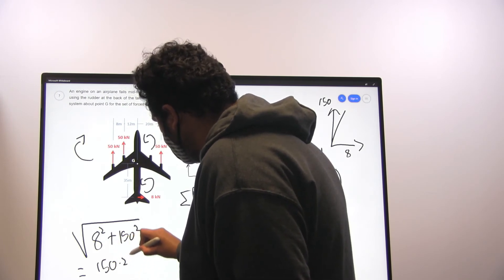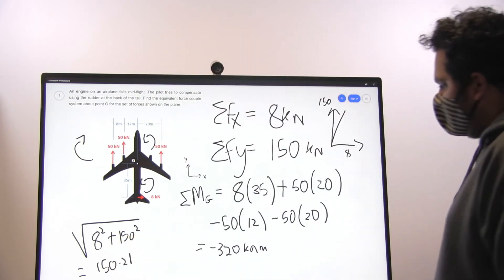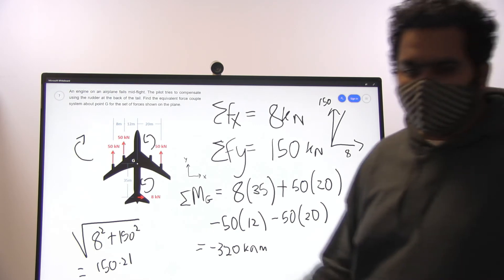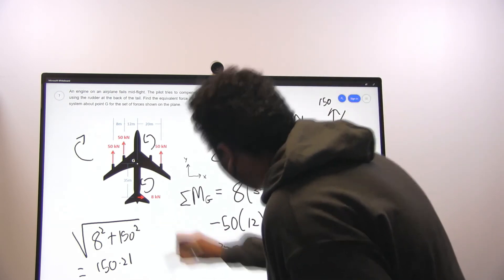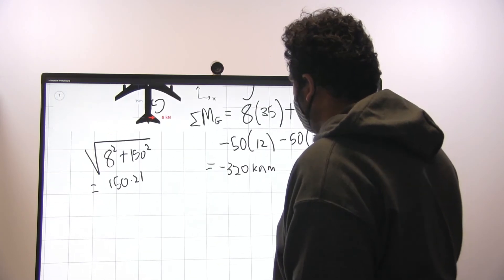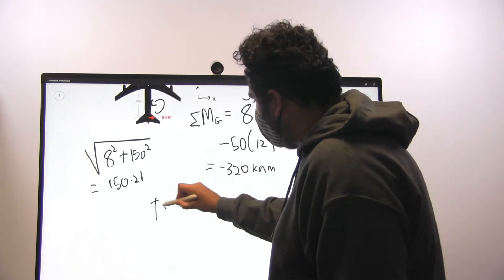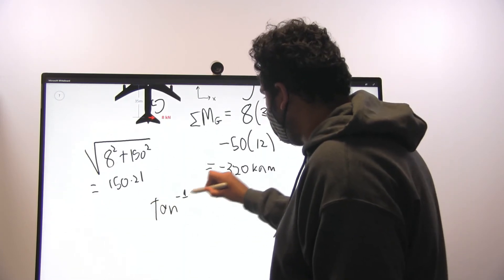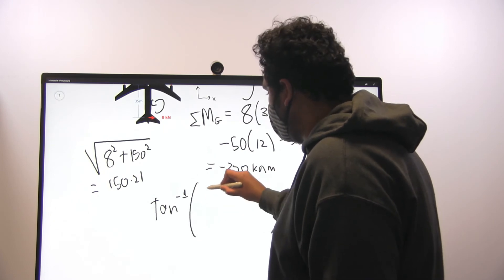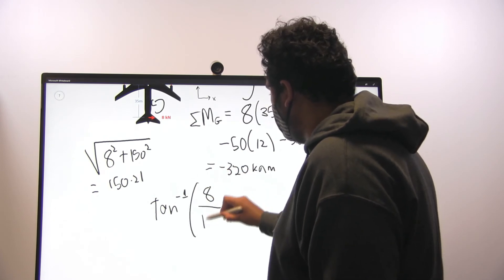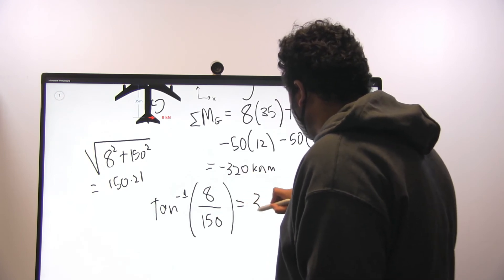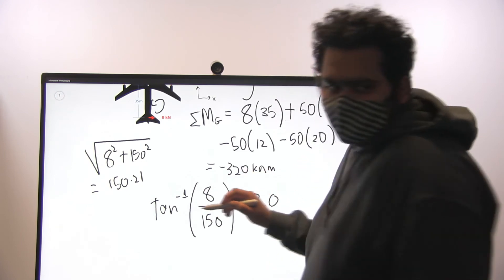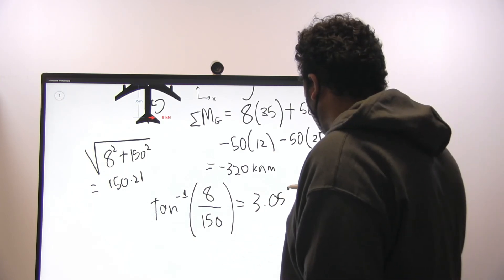We can also find the angle it's going to tilt in by doing tan inverse, or arctan, 8 by 150. And that's equal to 3.05 degrees.